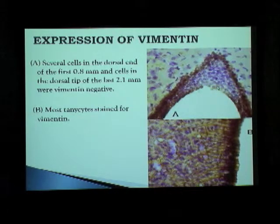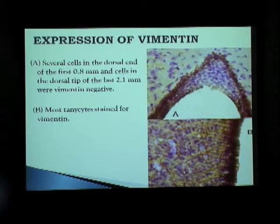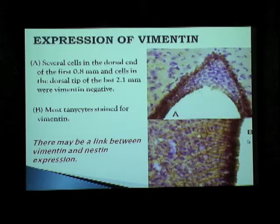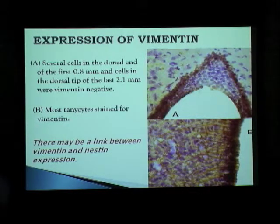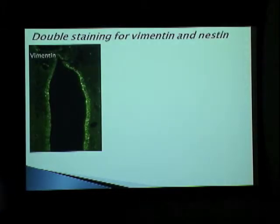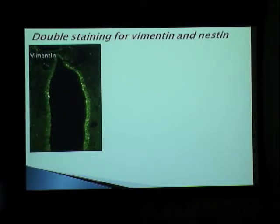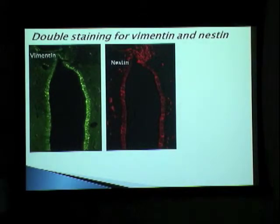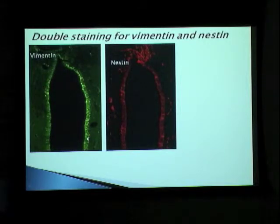We also observed that most tanycytes stained for nestin. We can see the third ventricle here, and the tanycyte processes extending outwards from the third ventricle. This told us that there may be a link between vimentin and nestin — we're not sure, but there may be, because they both do stain for the tanycytes. Currently this research is preliminary; we haven't got convincing reports yet. But we did a double stain for vimentin and nestin. In green you can see the vimentin, and in red, when the same image was scanned using a confocal microscope, we observed cells positive for nestin — much fewer than vimentin, but they were there.